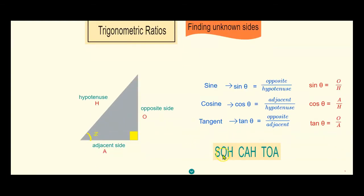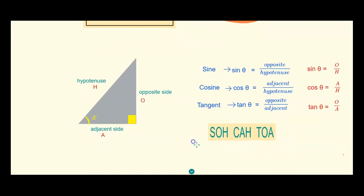So here is our guide. SOH means sine, which is equal to opposite side over hypotenuse. CAH is for cosine, which is adjacent side over hypotenuse. And TOA is for tangent, which means opposite side over adjacent side.